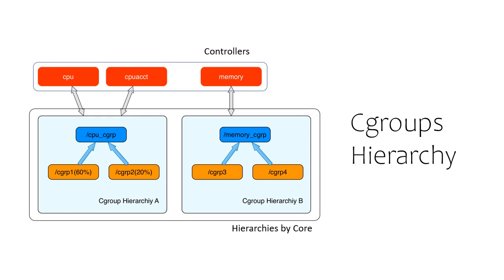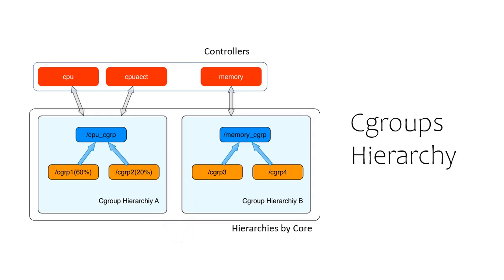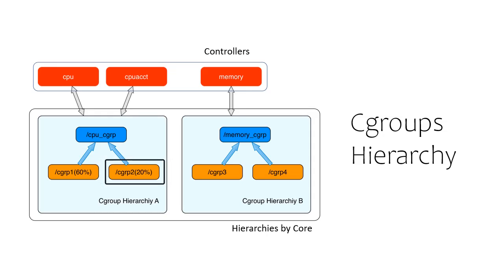Each time a new hierarchy is created on the system, all tasks on the system are initially members of the default cgroup of that hierarchy, which is the root cgroup. When a subgroup has been created and allocated a set of resources, a process from one cgroup can be moved to another cgroup in the same hierarchy. Resource allocation to a node in a hierarchy cannot exceed the resource allocation limits of its immediate parent. For example, any cgroup created under CGRP2 cannot be allocated more than 20% of the CPU time.